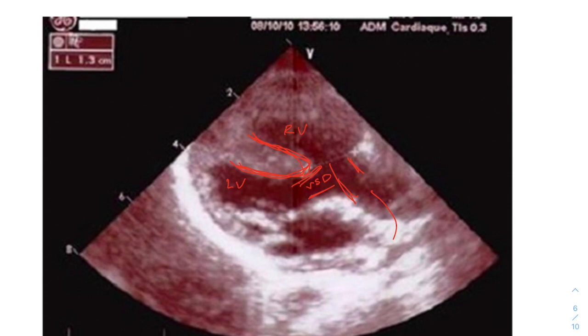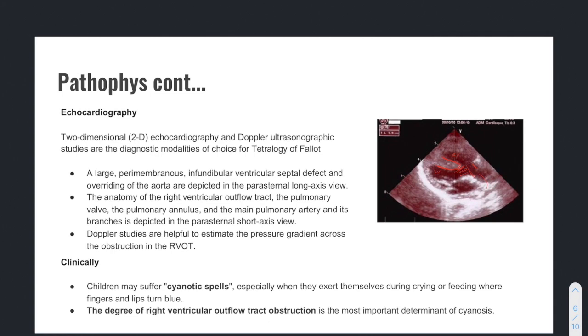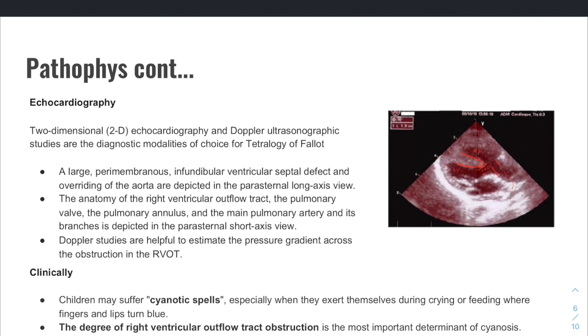So you have your VSD, you have your overriding aorta. And then you can also use a different view in your short axis, which would give you a good view of the pulmonary annulus and your pulmonary arteries and the branches looking at that. And also you can use Doppler to check out your right ventricular outflow tract to see what size you're working with in the right ventricular outflow tract.